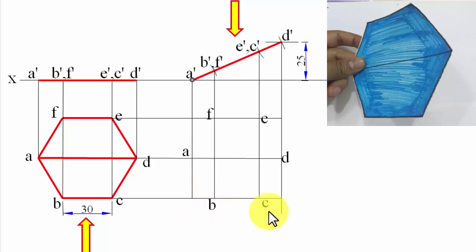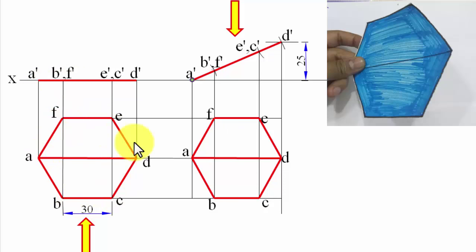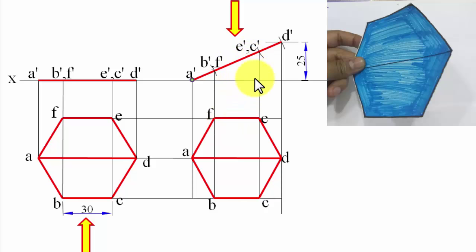Join each and every point. You can clearly see the difference between the two top views. In the first top view the object was entirely lying on the horizontal plane, so you saw the true shape of the surface. In this second top view the surface is inclined to the horizontal plane — that's why this is the apparent top view, slightly squeezed.